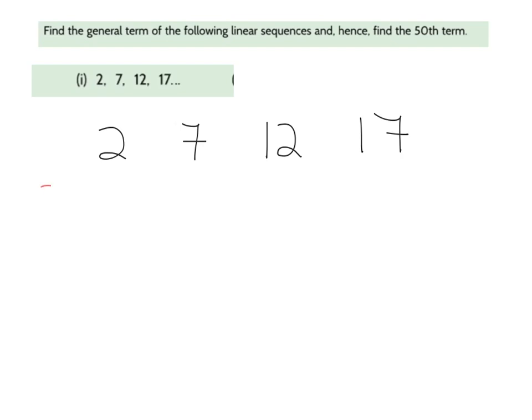And my start term is number 2. That's important. I'm going to need that. And I'm also going to need my common difference. So my common difference in this case is plus 5. 7 to 12 is again plus 5. And 12 to 17 is plus 5. So I can conclude that yes, this is a linear sequence. It's got the same common difference. And my common difference is plus 5.